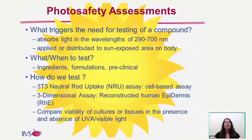The two assays that we routinely use for the in vitro methods are the 3T3 NeutralRed uptake assay, which is a cell-based assay, and also the three-dimensional reconstructed human epidermis assay, or the RHE assay. Both of these assays have similarities in that we're comparing viability of tissue culture or actual tissues in the presence and absence of UVA and visible light.